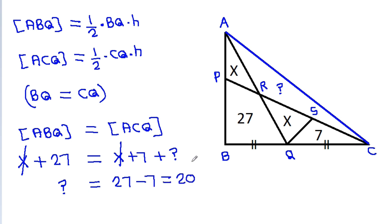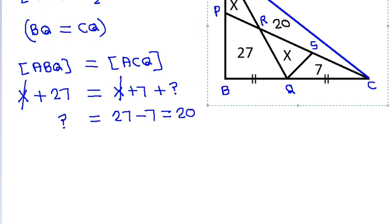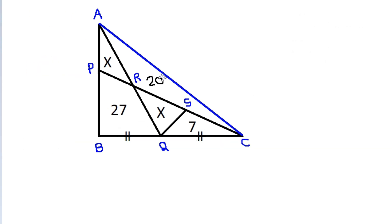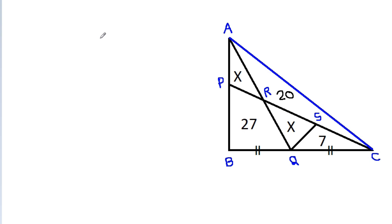So that unknown area is 20. Now, area of quadrilateral BPRQ is 27.